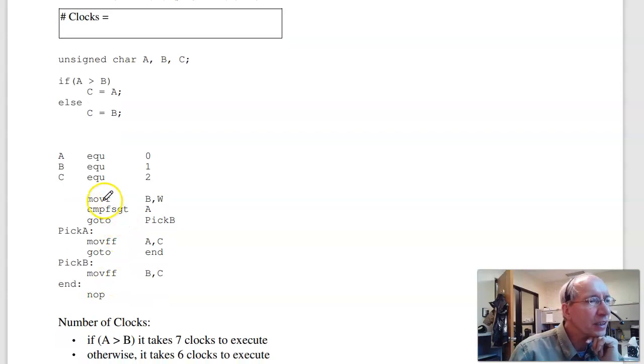In terms of clocks, these are compiler directives that just say that whenever you see an A, it means 0. Here's the first line of code. That's 1, 2, 3. If I don't skip, 4, 5, 6 for goto, 7 clocks. The other path is 1, 2, 3. If I do skip, 4, 5, 6. It takes 6 or 7 clocks for this code to execute.